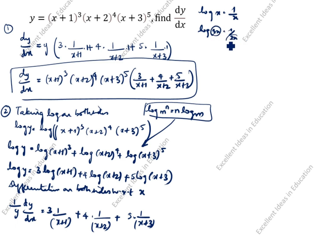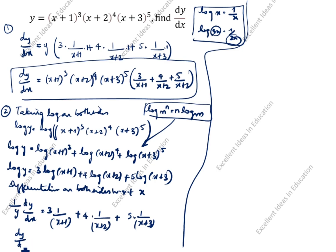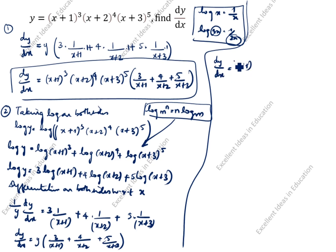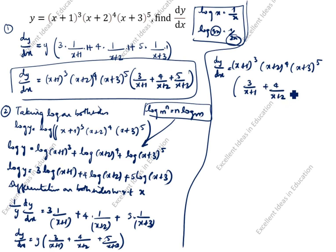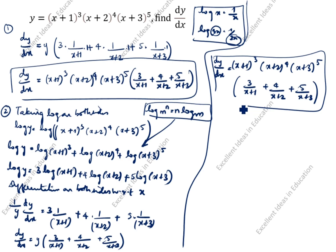Whatever number is given, that number comes in the denominator — this is the formula. After that, dy/dx equals y times the bracket: 3/(x+1) + 4/(x+2) + 5/(x+3). Substituting y: dy/dx = (x+1)³·(x+2)⁴·(x+3)⁵ · [3/(x+1) + 4/(x+2) + 5/(x+3)]. This is the answer — the second method.